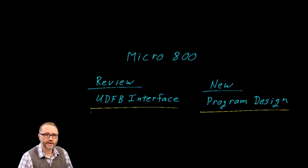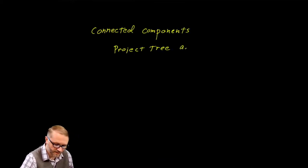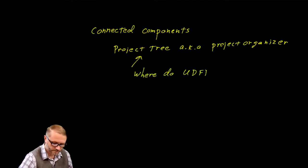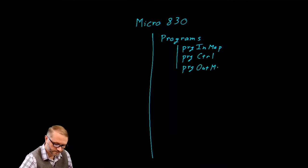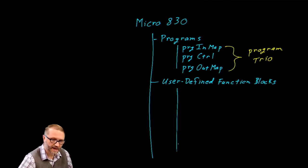Let's start by taking a quick look at the connected components project tree, otherwise known as the project organizer. We look at this because we need to know where the user-defined function blocks live. That project tree might look something like this. Under programs, we find our program trio. Lower in that tree, we'll find the user-defined function blocks section.